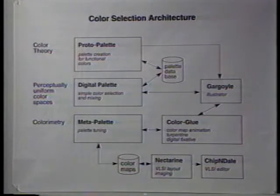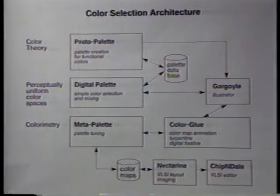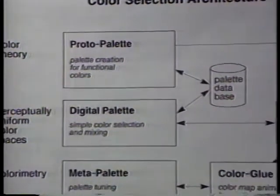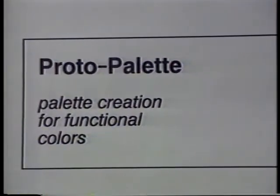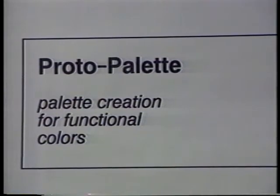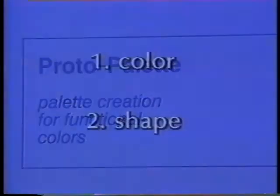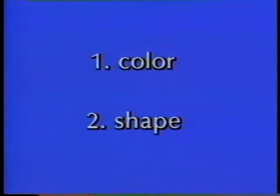Rather than a large monolithic color selection tool trying to solve all problems at the cost of a complex user interface, we propose a small suite of simple tools. Let us first examine the color selection problem for functional colors. The central idea is to let the user operate on whole palettes instead of single colors at a time. A further important point is the methodology. Our tools encourage the user to work first on the colors and then on the shapes. This way, users have a better chance of obtaining pleasing colors.